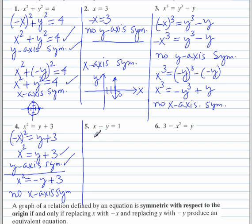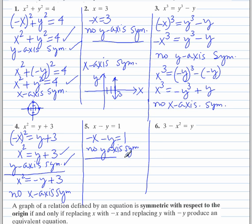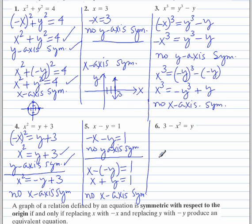Number 5. Replace x with negative x — we do not end up with the same equation. We also do not end up with the same equation when checking for x-axis symmetry. So there is no x-axis symmetry. This is an equation of a slanted line that does not go through the origin. This one, we will learn later, is a parabola, and there is y-axis symmetry but no x-axis symmetry.